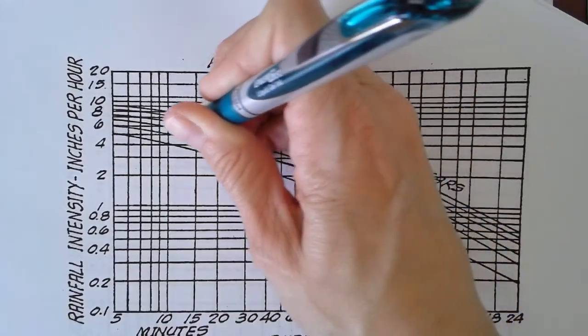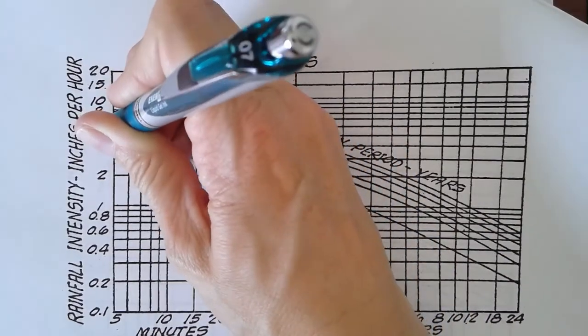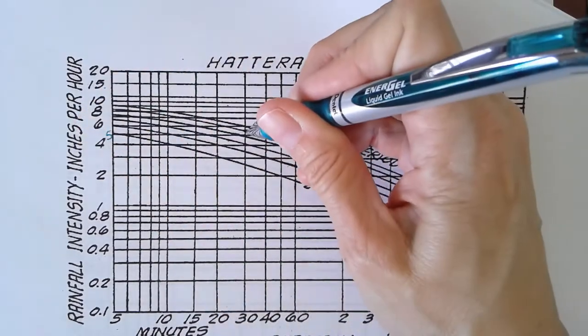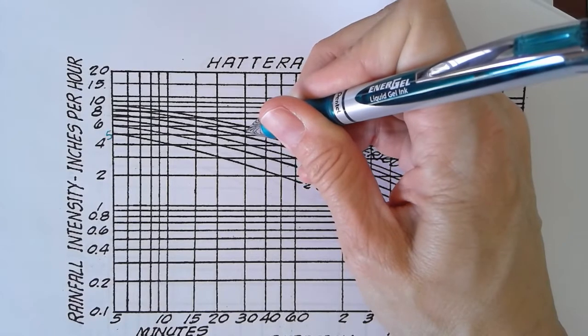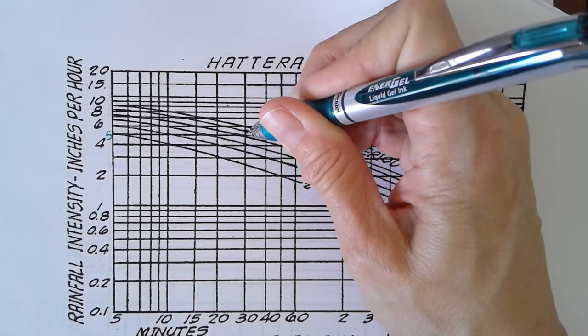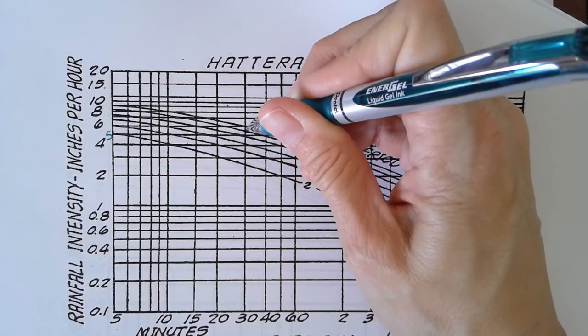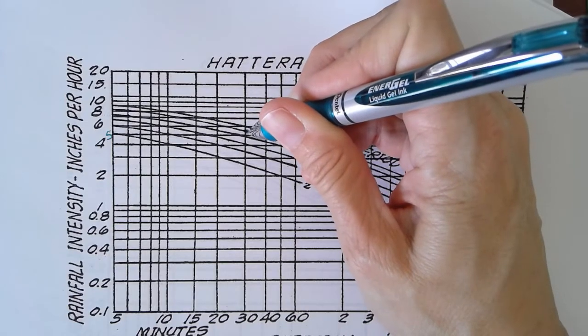And if we take that across, we can see this is four, so this is five, this is six. It looks like it's right at that five and a half mark between five and six, but as we discussed in class, I mean, you could go somewhere in that, you know, between five and six range.